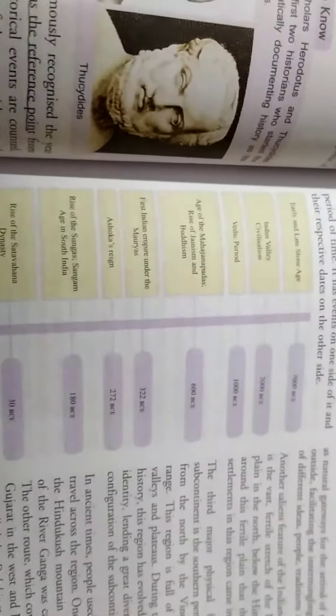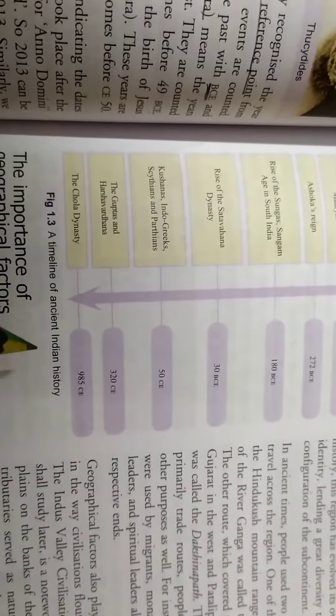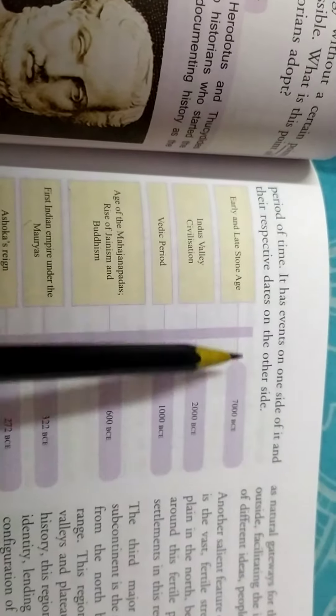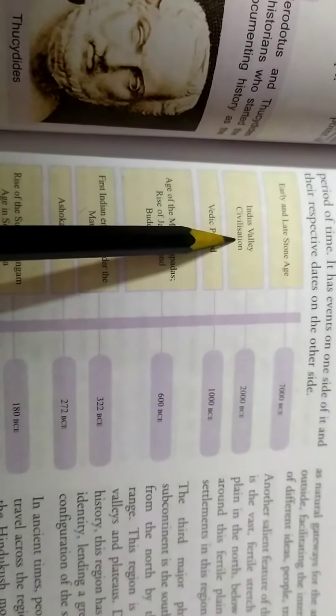As you can see this picture, it is present in page number 103. This is a timeline of the ancient Indian history. The first is early and the late stone age, that is 7000 BCE. Next is Indus Valley civilization, that is 2000 BCE.